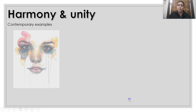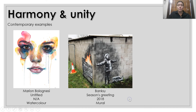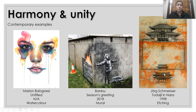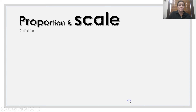Some contemporary examples of harmony and unity. For me, the Jorg Schmeiser work — the etching with the temple — shows great unity and harmony through the balance of colour and also this beautiful framing of the work. And it's a personal opinion.